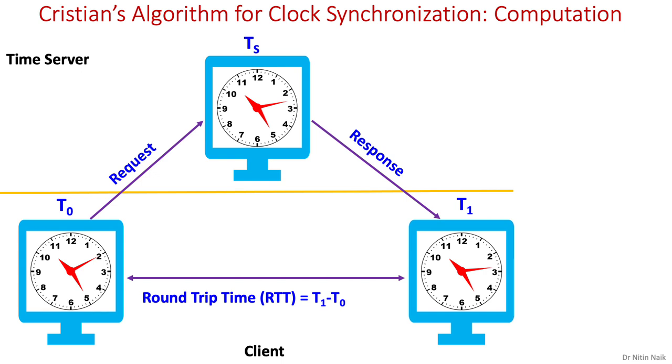Round trip time refers to the time duration between the start of a request and end of its corresponding response. For calculating the synchronized time on the client, we need to work out the delay time in sending the message from the server to the client, which is (T1 minus T0) over 2.